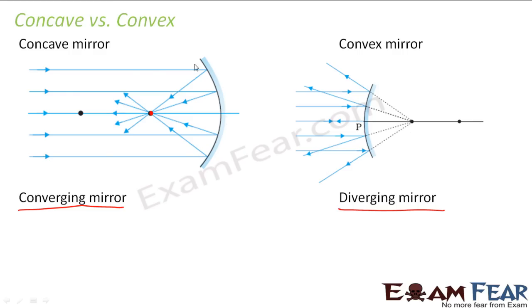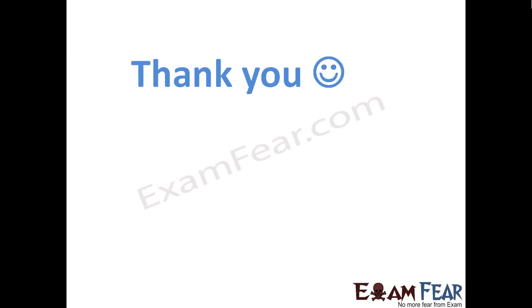So this mirror is similar to the one which we had drawn in the previous slide. This is like this and this is like this. So this part is the silvered part. Here the inside part is the silvered part. So cave means inside. So cave means inside is silvered.